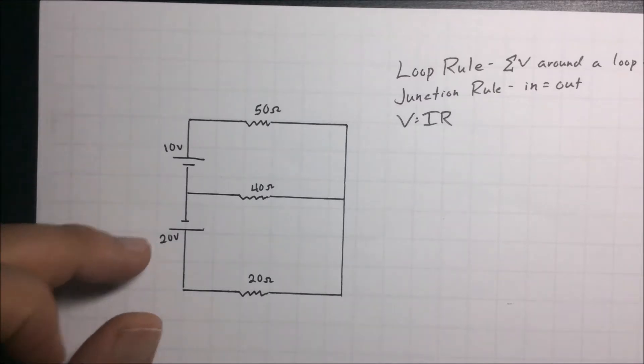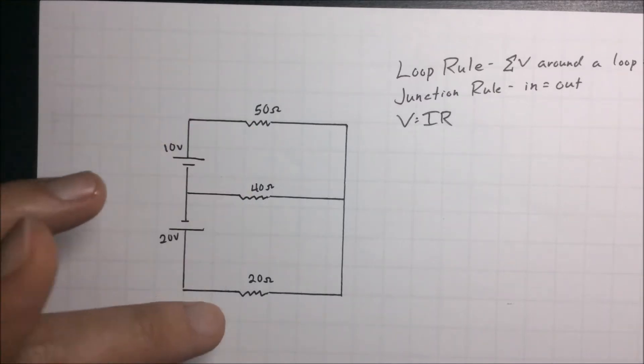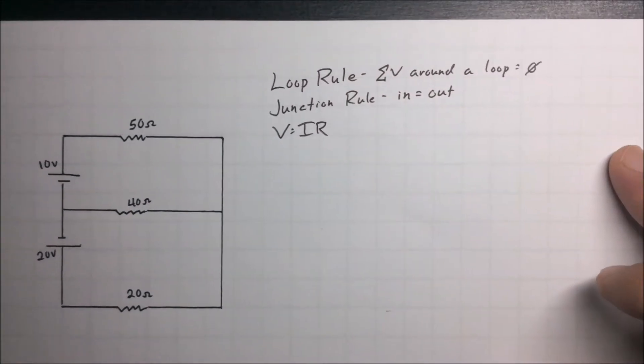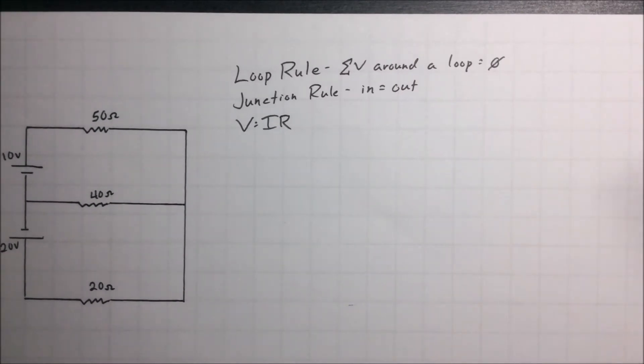Here we have a 10 volt, a 20 volt battery, a 50, 40, and 20 ohm resistor, and to solve this we're actually going to use these two rules, they're Kirchhoff's rules. One is the loop rule which says for a closed loop the total voltage will be zero, and the junction rule says anything into a junction should be equal to anything out of a junction, just conservation of charge and conservation of mass.